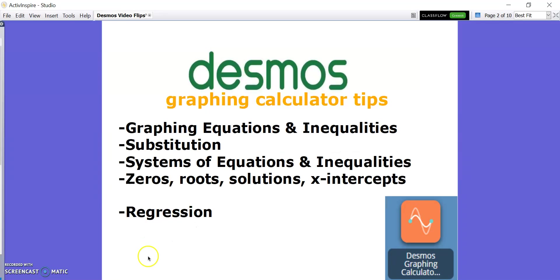Specifically, I'm going to look at Algebra 1 type tips that align with the Virginia State Standards of Learning. The stuff I'm going to talk about here is graphing equations and inequalities, substitution, systems of equations and inequalities, zeros, roots, solutions, x-intercepts, which is where y equals 0, f of x equals 0. And in part 2 of my video, because I can only upload 15-minute videos, I'm going to do regression as a short video separately.